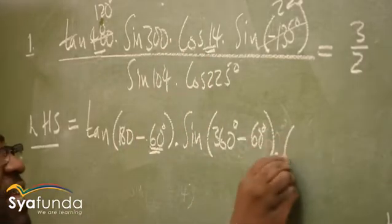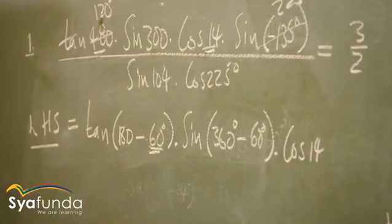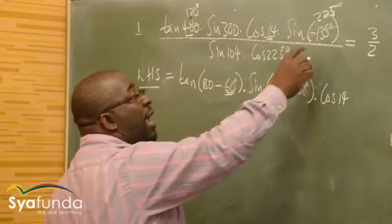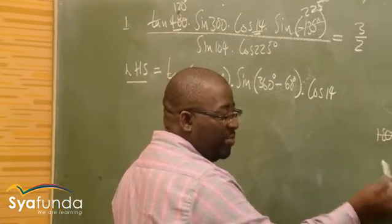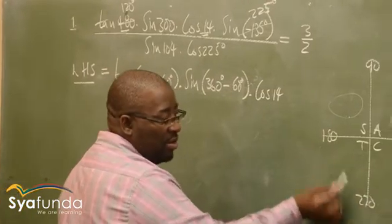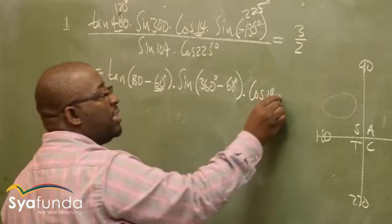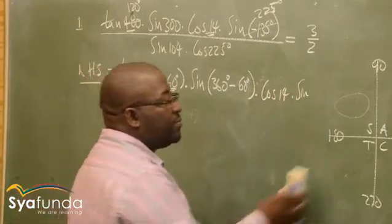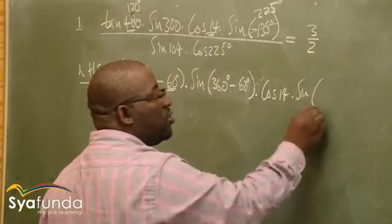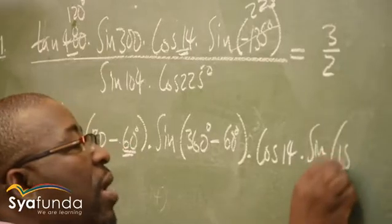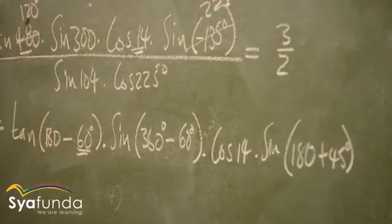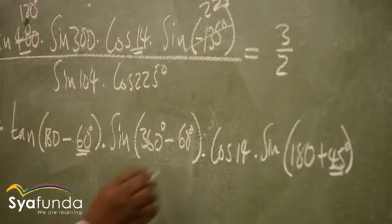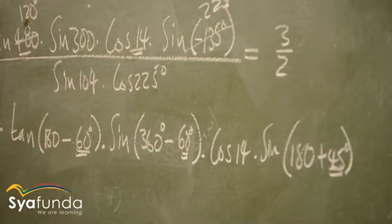This is cos 14 — there is nothing I can do with it. It stays. Now 225 is in the third quadrant — above 180 and less than 270. This quadrant uses 180 plus. So this one will use sine of 225, which is 180 plus 45. Is 45 a special angle? Yes, it is a special angle. So the reduction formula forces special angles, and I also need to think in terms of special angles.